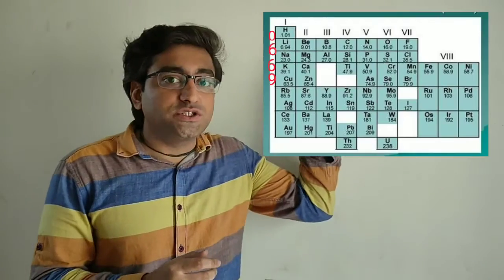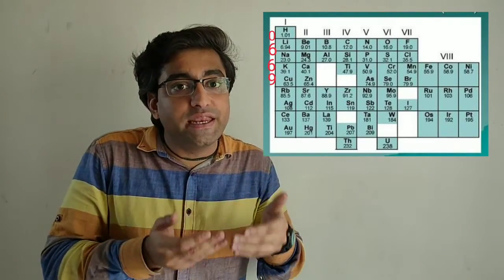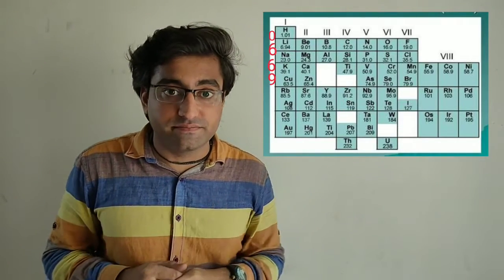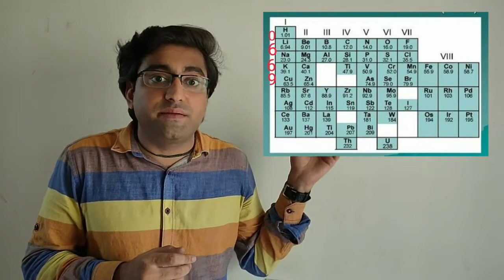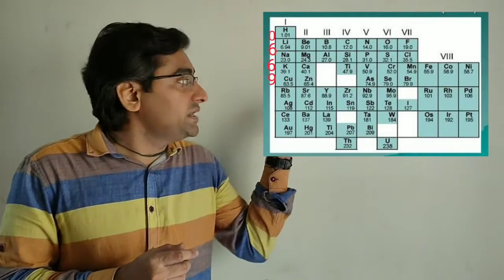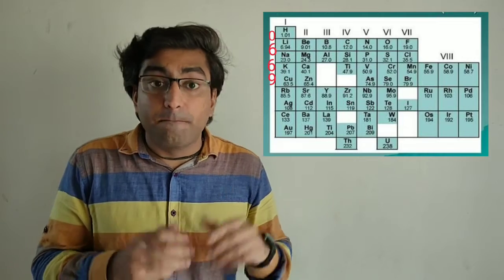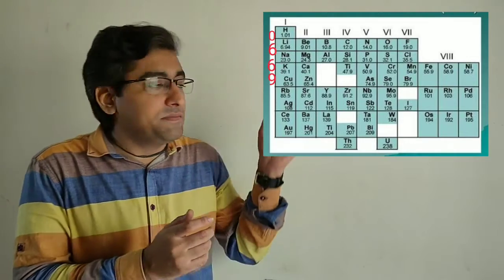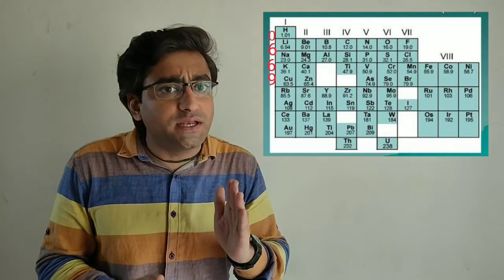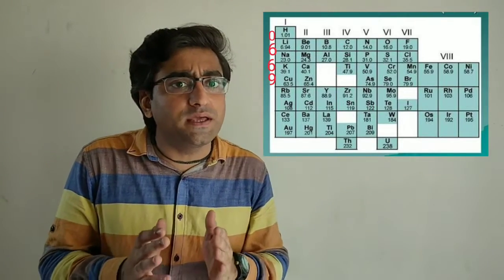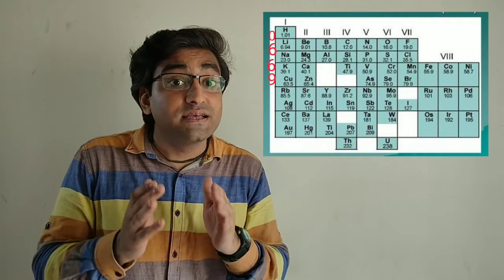Now let us see the pattern in which the properties are repeating. After hydrogen, the next similar properties were found in lithium, so there are zero elements between hydrogen and lithium. After lithium, similar properties are found in sodium — in between there are six elements. After sodium, the next element with similar properties is potassium — again six elements in between. But after potassium, the next similar properties were found in copper, with nine elements in between. As we can see, the properties are repeating — after zero, six, six, and nine — but they are not at fixed intervals. Hence, this justifies the statement of the law: the properties are periodic functions of their atomic masses, meaning they repeat but not at fixed intervals.